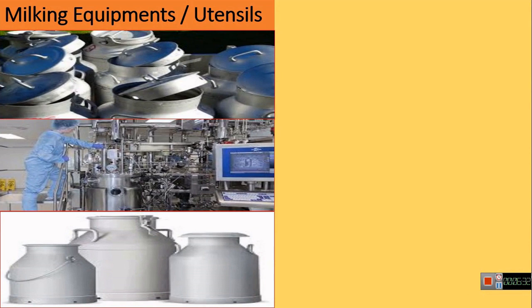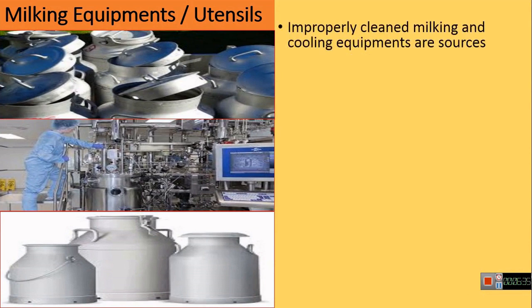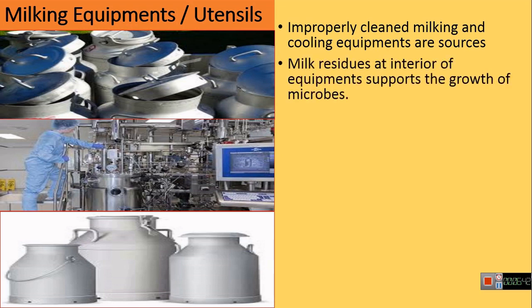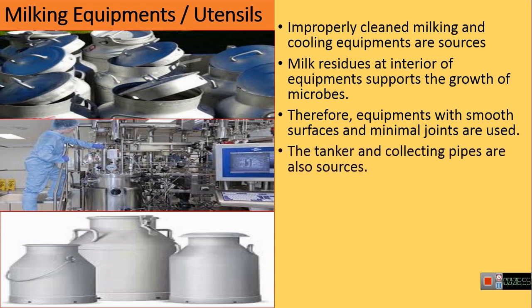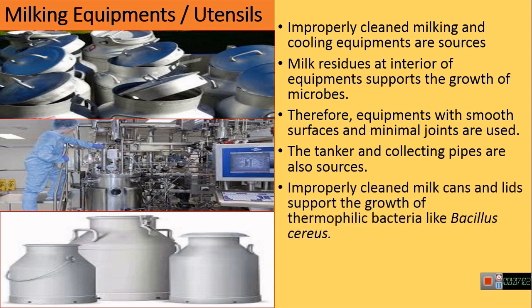Milking equipment and utensils also act as a source of contamination. Improperly cleaned milking and cooling equipment are the main sources of milk contamination. Milk residues left on the interior surfaces of milk equipment support the growth of a variety of microorganisms. Therefore, equipment with smooth surfaces and minimal joints are used. Tankers and collecting pipes are also potential sources of contamination if not adequately cleaned. Improperly cleaned milk cans and their lids support the growth of thermophilic bacteria like Bacillus cereus. Improperly sterilized milking machines also contribute to the number of microorganisms in the milk.